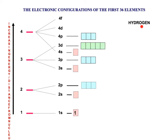For hydrogen, which has 1 electron, there are two ways to write the configuration. Using the box method, the electron goes in the lowest energy level — the 1S subshell — drawn as an arrow pointing up to show spin. The convention is always to draw the first one with the arrow pointing up. Using shorthand notation, this is written as 1S¹.